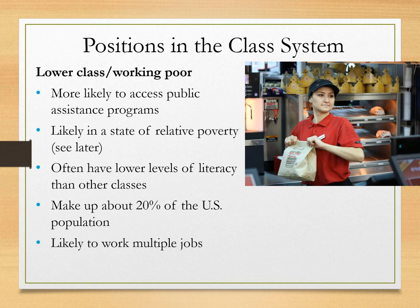The lower class, sometimes called the working poor, are more likely to access public assistance programs because the jobs they do often aren't enough to pay all their bills without government help. They are more likely than other classes to be in a state of relative poverty, and often have lower levels of literacy than other classes — not because lower-class workers are stupid, but because they're very tired. They often work multiple low-paying jobs. After a 12-hour day and putting their kids to sleep, they're not in the mood for in-depth reading. Lower-class workers make up about 20% of the total US population.